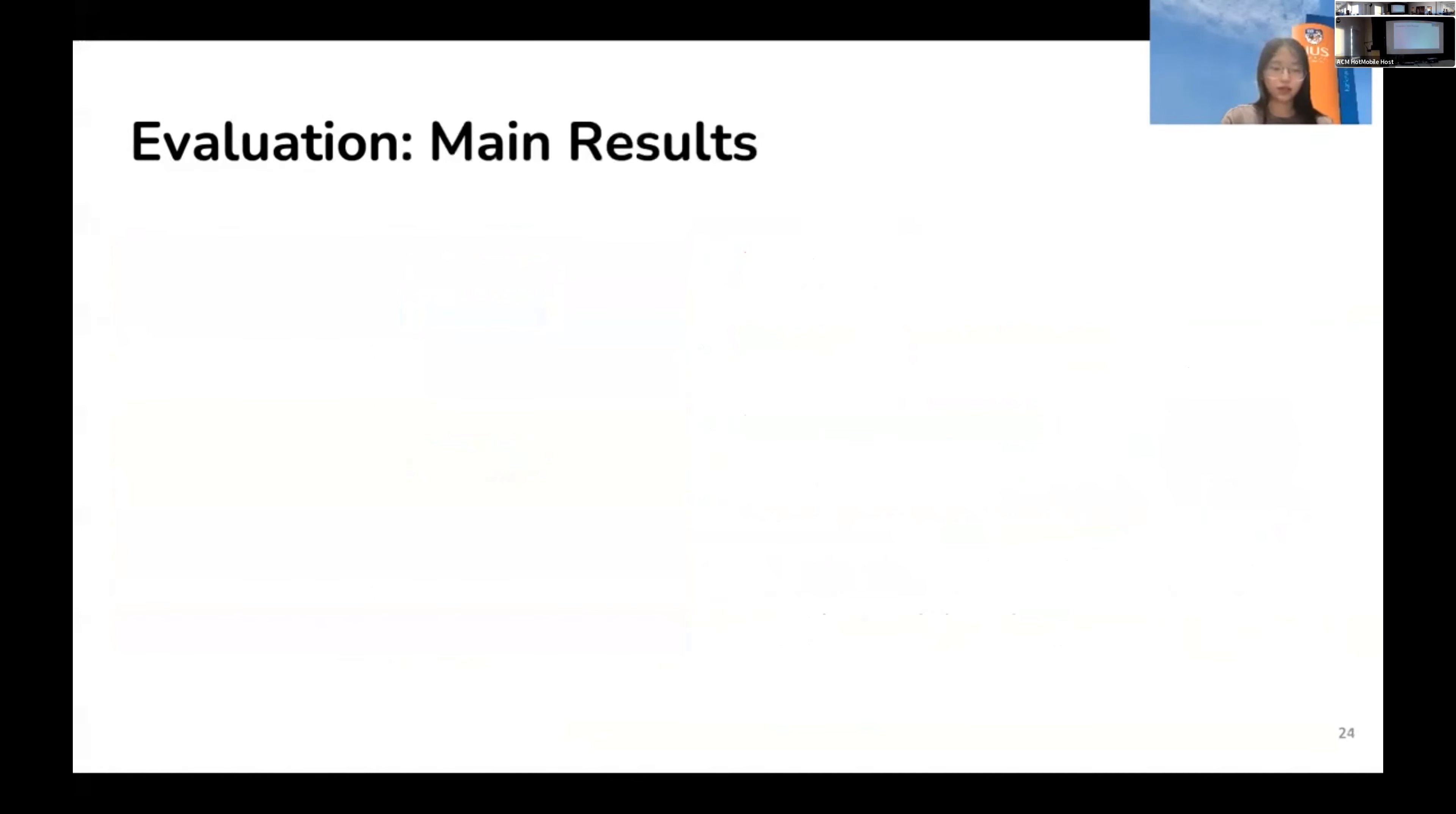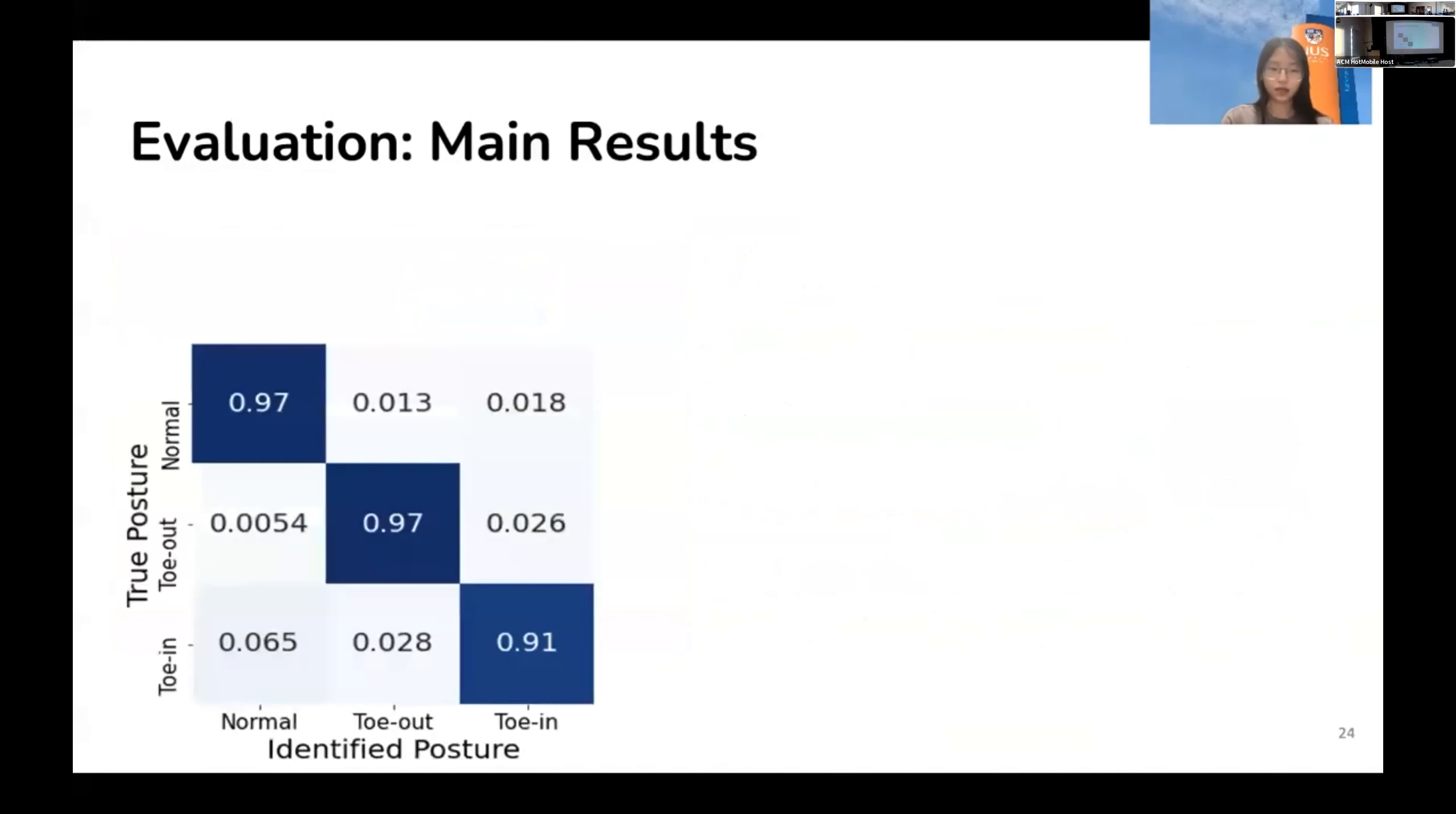We first summarize EarWalk's performance in a confusion matrix. The rows represent the actual walking posture, and the columns are the identified posture by our system. Each cell represents the ratio of identified cycles. So, you can see, EarWalk achieves an average accuracy of 94%.